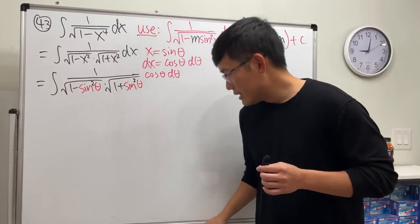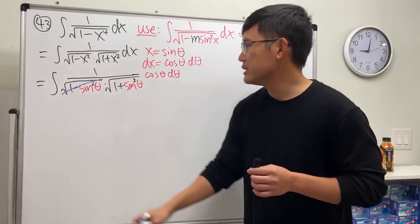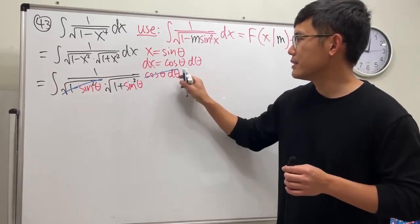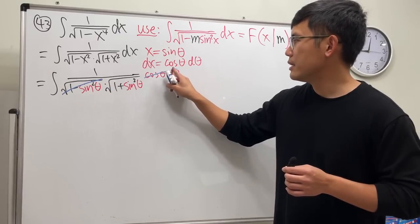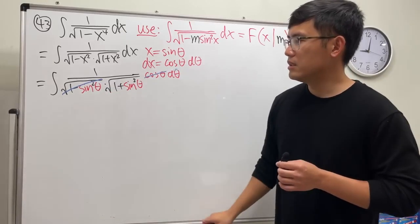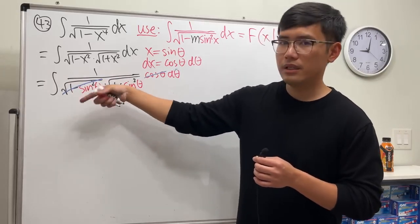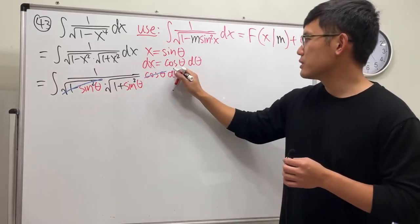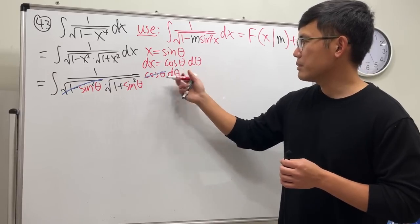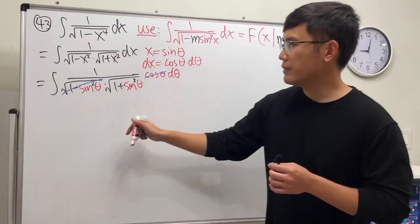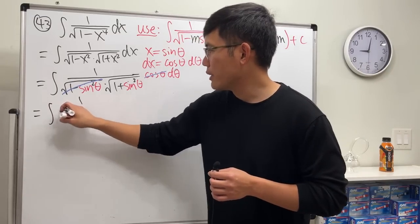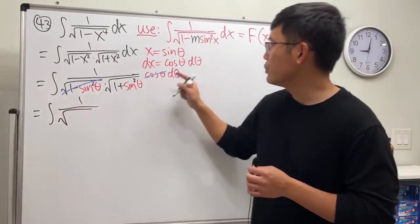In fact, we get to cancel this and that out because that's indeed cosine squared in the square root, which is cosine theta. So they are the same—they cancel. So now we just have to integrate this: integral 1 over the square root...